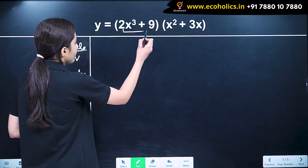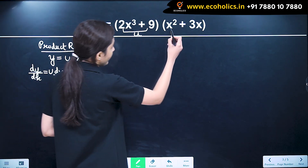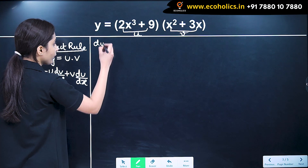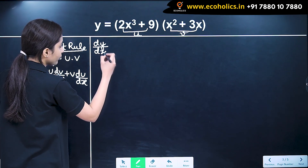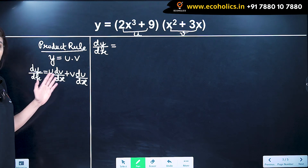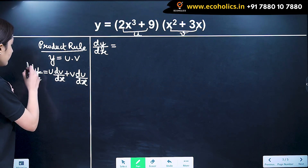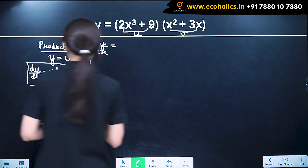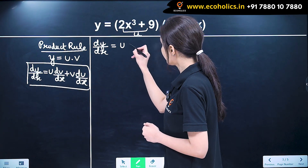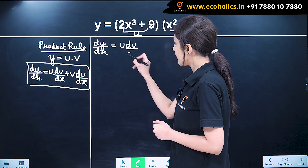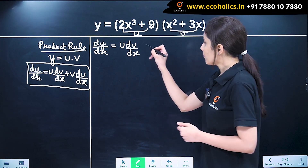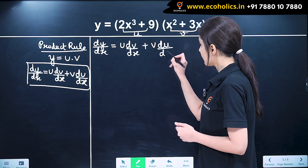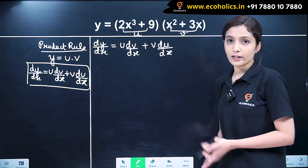Let us say u is (2x cubed plus 9) and v is (x squared plus 3x). Our dy by dx, using the product rule or multiplication rule of differentiation, is u dv by dx plus v du by dx.